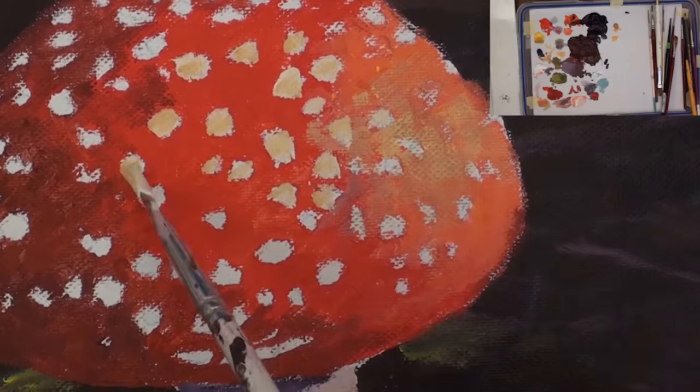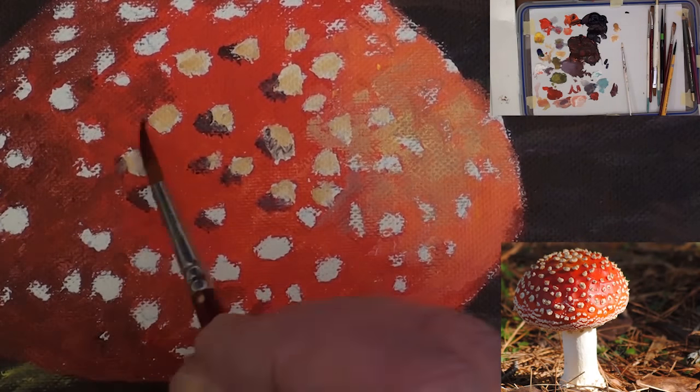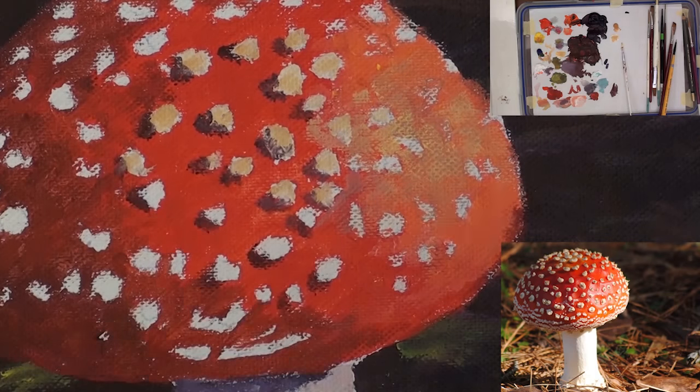Fill the nodules in with some yellow and carefully add shadows to them. Finish the right side first.